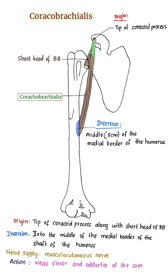Supply: coracobrachialis is supplied by the musculocutaneous nerve. Action: it is a weak flexor and adductor of the arm.